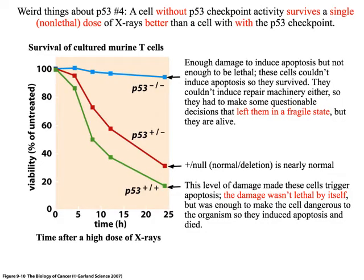You may recall a weird thing about P53 number 4, where we talked about this particular dose response, where we're giving some cultured cells a fairly high dose of x-rays just once. So under those conditions, a cell that has a checkpoint, the normal cells down here at the bottom, those guys will stop.